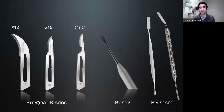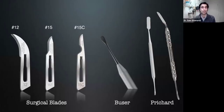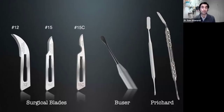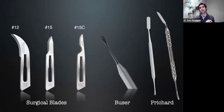Looking at our other surgical instrumentation: we'll need our surgical blades. The most traditional is the number 15. There are alternatives — the 15C, which is a much smaller, more surgical blade. A lot of periodontists like this because they feel it gives a little more precise cut. And there's the number 12 blade, which has an angulation that can come really in handy depending on where in the mouth you're working — especially in those far distal areas, second molars, retromolar pad.